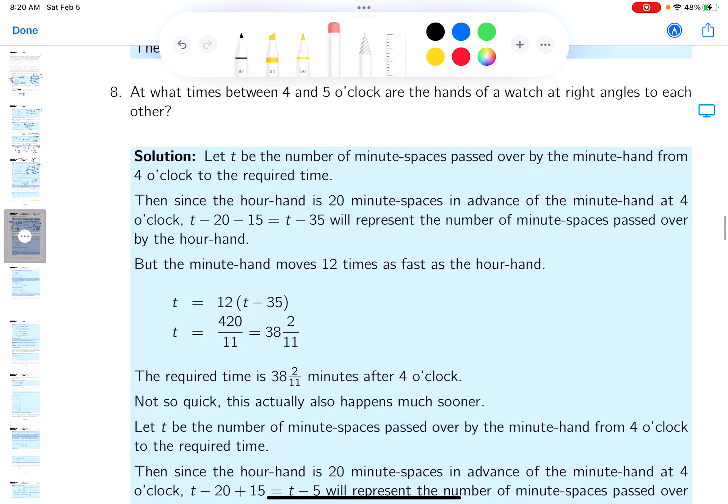Okay, this is a similar problem that we had prior. It's about the hands on a clock. It says at what times between 4 and 5 o'clock are the hands of a watch at right angles to each other? They're actually asking for the exact time.